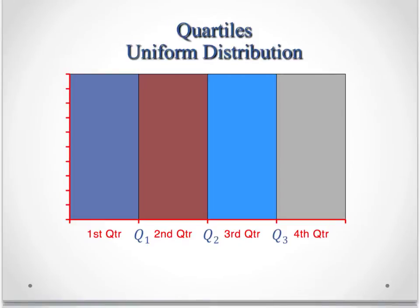On a uniform distribution, it would look like this. We'd have the first quartile up to Q1, the second quartile up to Q2 or the median, third quartile up to Q3. Here we would have the max at this end, and we would have the min at this end.